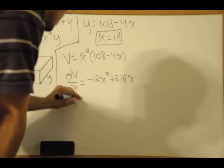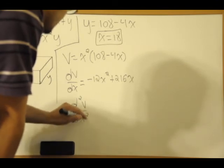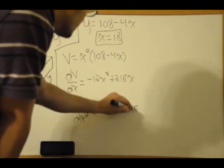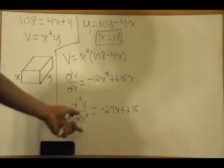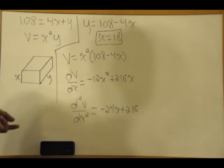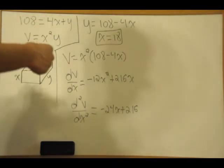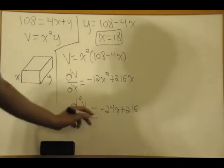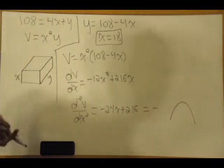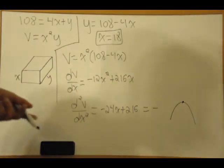The second derivative d²V/dx² equals minus 24x plus 216. If you plug in 18, minus 24 times 18 is greater than 216, so the answer is going to be negative. That tells us it's concave downward. The sign of the second derivative at x equals 18 is negative, so that truly is a maximum point.